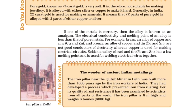Alloying is a very good method of improving the properties of a metal. Iron is the most widely used metal, but pure iron is very soft and stretches easily when hot. If it is mixed with a small amount of carbon (about 0.05%), it becomes hard and strong. When iron is mixed with nickel and chromium, we get stainless steel, which is hard and does not rust. The properties of any metal can be changed if it is mixed with some other substance (a metal or a non-metal). An alloy is a homogeneous mixture of two or more metals, or a metal and a non-metal.